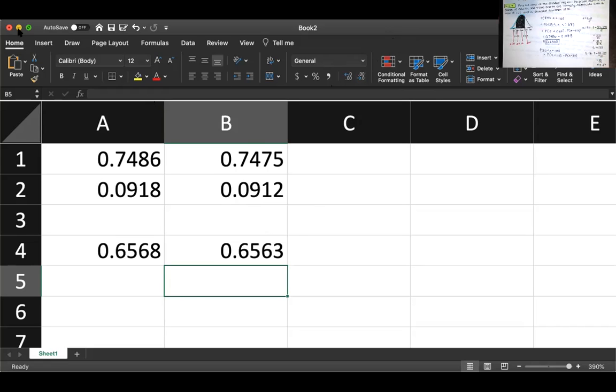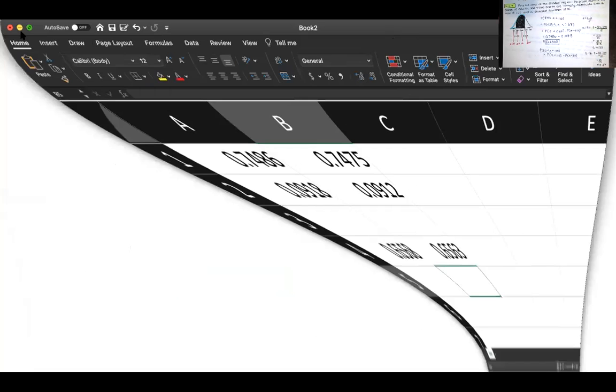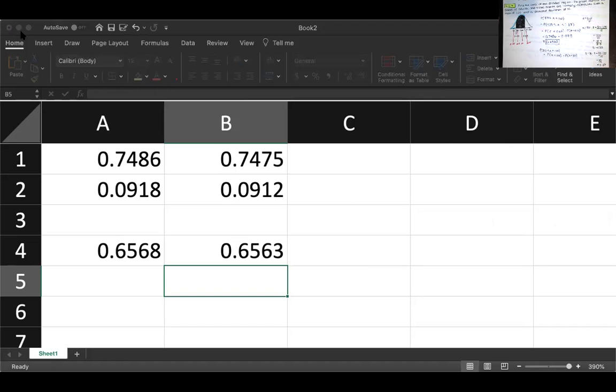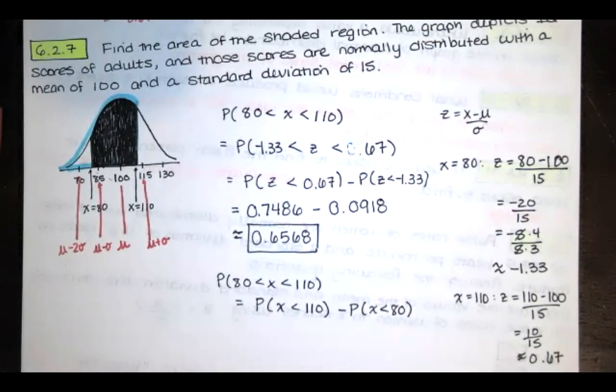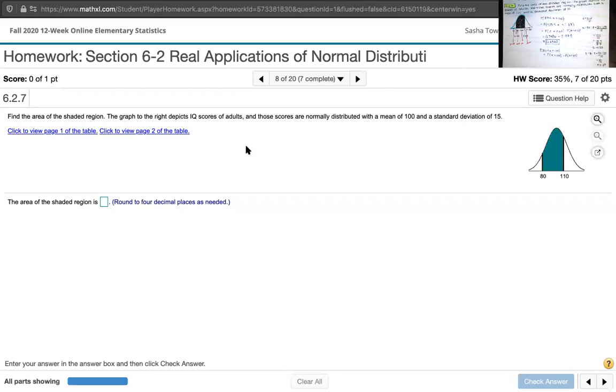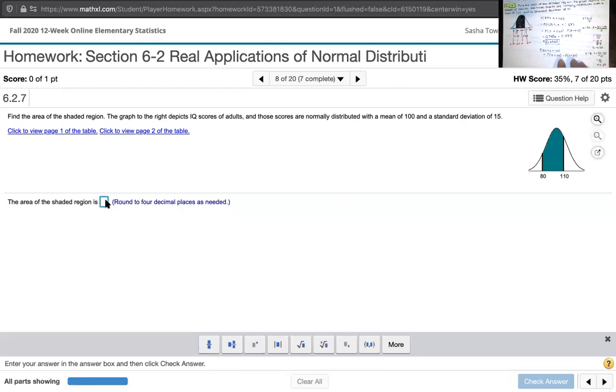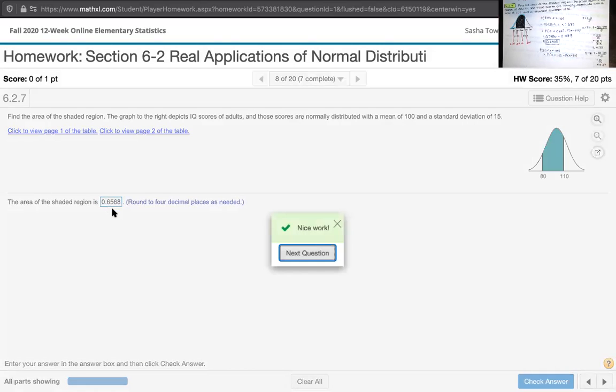Now let's go to the homework and make sure that we're giving my lab statistics what they want. Now I'm going to use the ones from the table 0.6568. I'm very curious to know if it would also accept that 0.6563, but we'll have to try that next time.